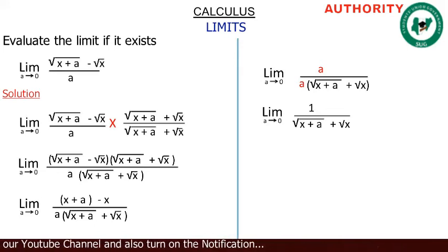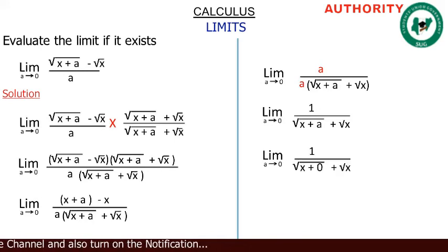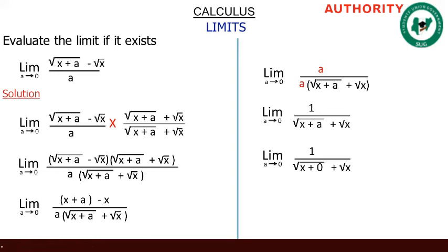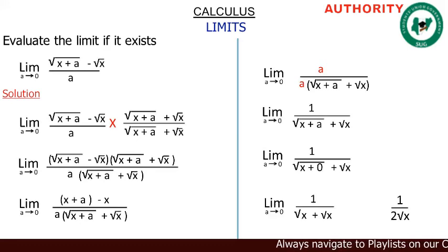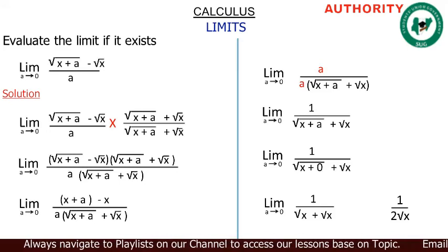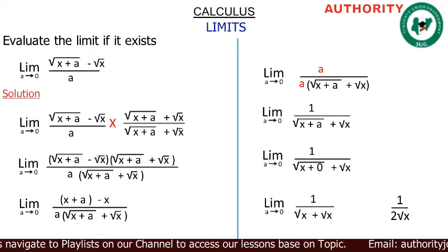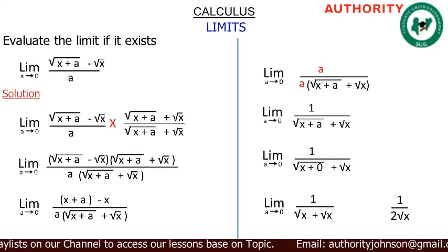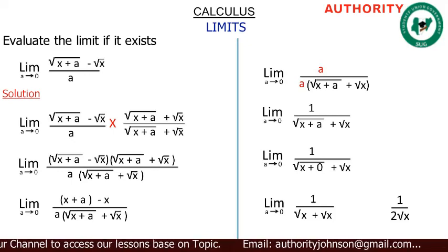Now we plug in a equals zero. We get one over the square root of (x plus zero) plus the square root of x. Since adding zero changes nothing, the square root of (x plus zero) is just the square root of x. So we have one over the square root of x plus the square root of x. That is like orange plus orange giving two oranges, so we get one over two times the square root of x.